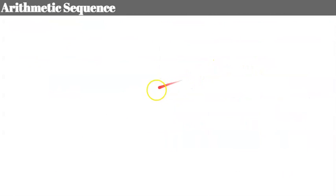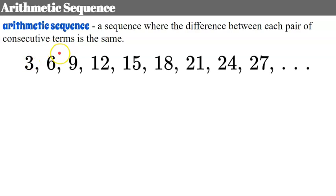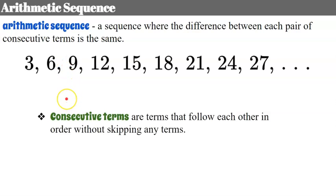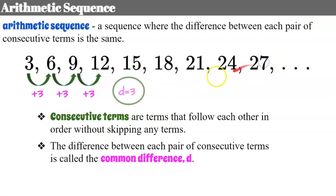An arithmetic sequence is a sequence where the difference between each pair of consecutive terms is the same. Consecutive terms are terms that follow each other in order without skipping. So we go from 3 to 6, 6 to 9, and we need to have a common difference — the same value added each time. Here we add 3, add 3, add 3. So our common difference, d, is 3.